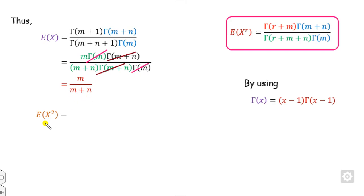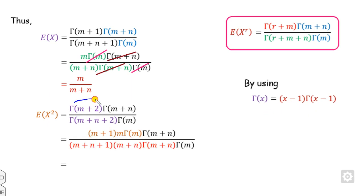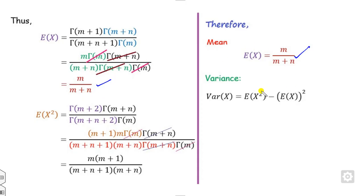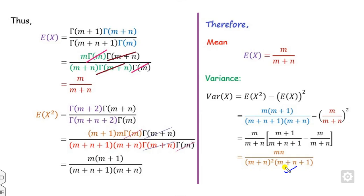Similarly, substituting r=2 gives E[X²]. Using the same gamma function expansion, gamma(m) and gamma(m+n) terms cancel out, leaving the expression for E[X²]. Once we have E[X] and E[X²], the variance equals E[X²] minus E[X] squared. Substituting the values and simplifying, with m/(m+n) as a common factor, we arrive at the final variance formula.